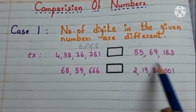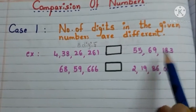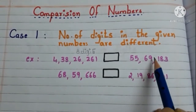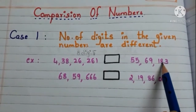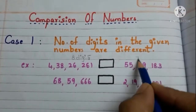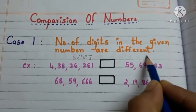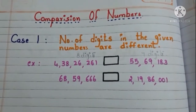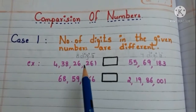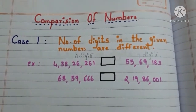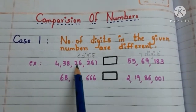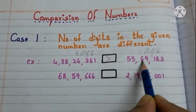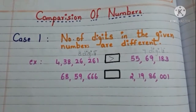And count how many digits are there in this number. 1, 2, 3, 4, 5, 6, 7. Here, 7 digits. So obviously an 8-digit number is greater than a 7-digit number. So this number is greater than this number.